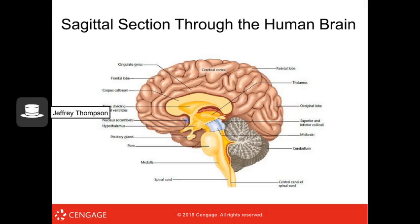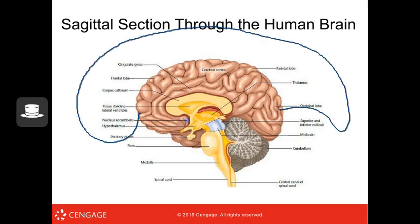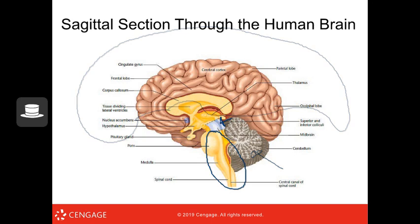Here's a sagittal cut of the human brain. We can see the cerebellum with its deep folds, the brain stem, and the superior and inferior colliculi. This side view allows you to see where everything fits in relative to the rest of the brain.